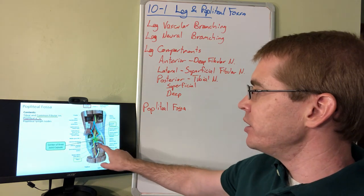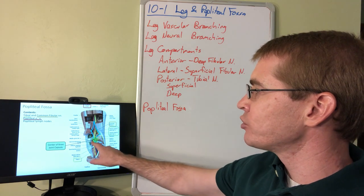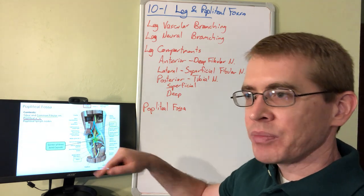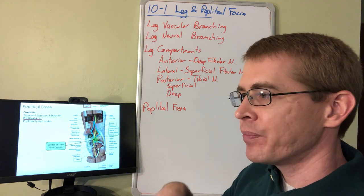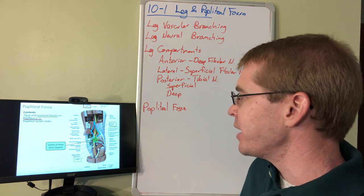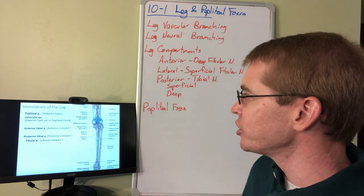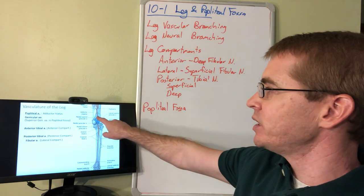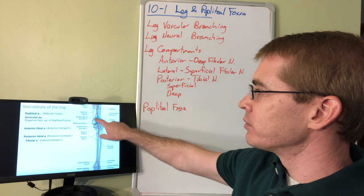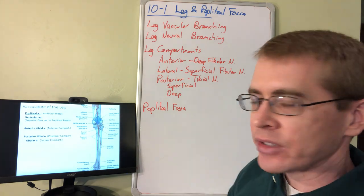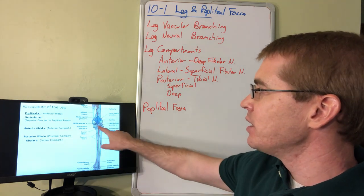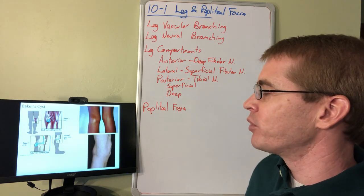Typically the inferior genicular branches travel above the soleus muscle, which is attaching to the head of the fibula, but they will have branches throughout that region. Here we can see where the popliteal fossa is in relation to the vasculature and these different important branches.